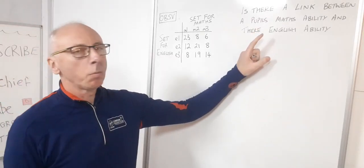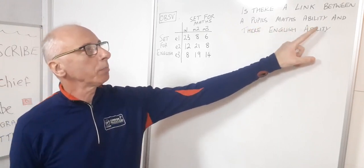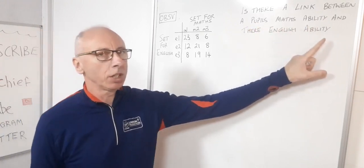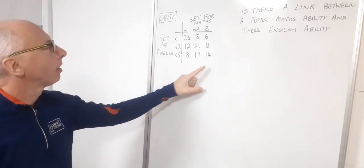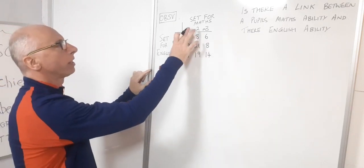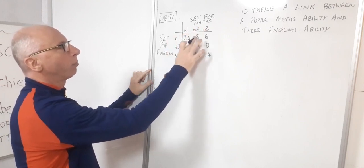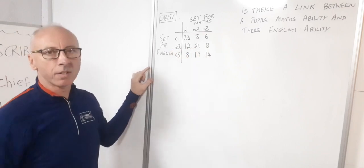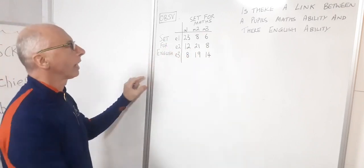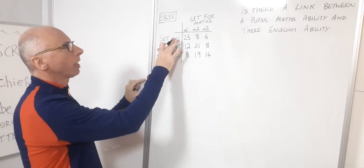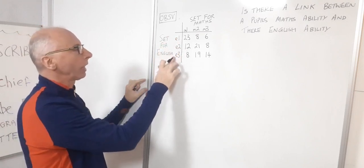We've got a question here. What we want to know is: is there a link between the pupils' maths ability and their English ability? We've got a set of data which gives corresponding sets for maths — set 1, set 2, set 3 — and the number in those corresponding sets, and then the set that the same pupil is in for English, corresponding to English set 1, English set 2, English set 3.